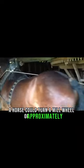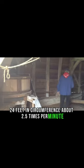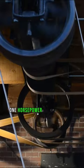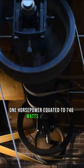According to his calculations, a horse could turn a mill wheel of approximately 24 feet in circumference about 2.5 times per minute. According to this, one horsepower equated to 746 watts of power.